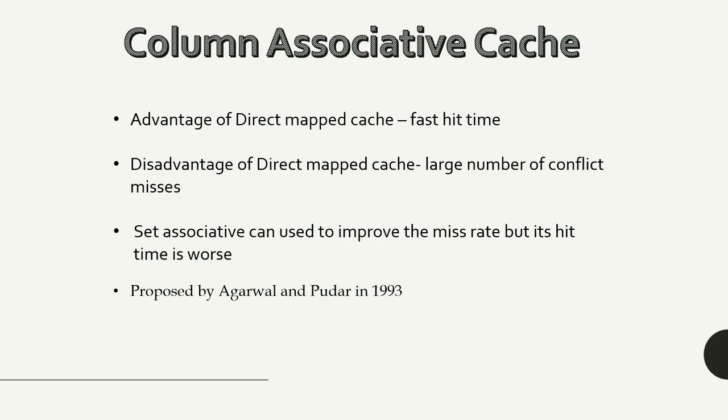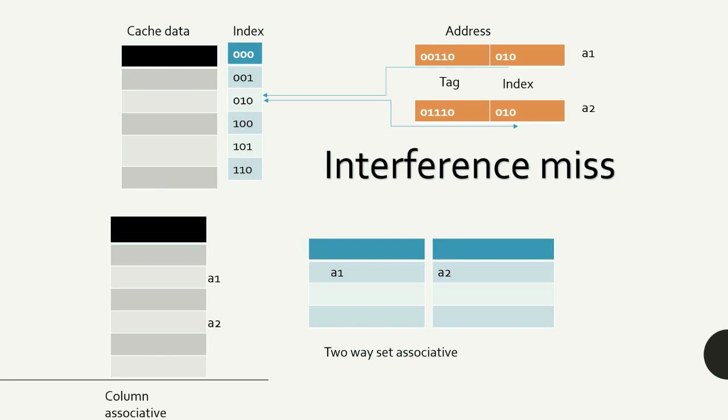Set associative caches can improve the miss rate, but they have a worse hit time because the index is mapped to a set containing two or four blocks, which takes a little more time to find the right data. An alternative technique proposed by Agarwal and Pudar in 1993, called the column associative cache, mainly aims at improving the hit time of direct map caches while also lowering the miss rate compared to set associative caches.